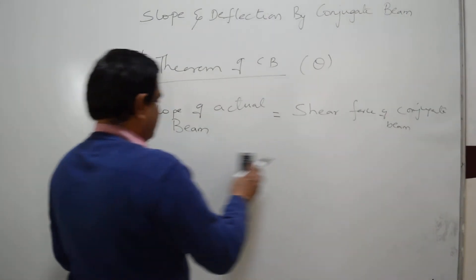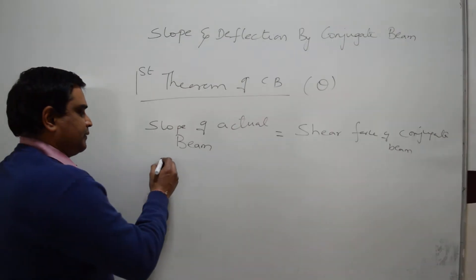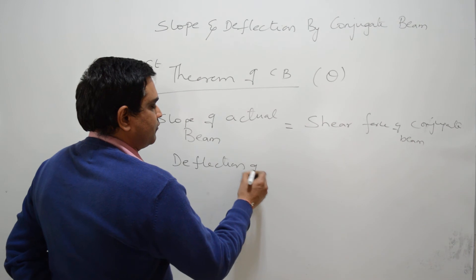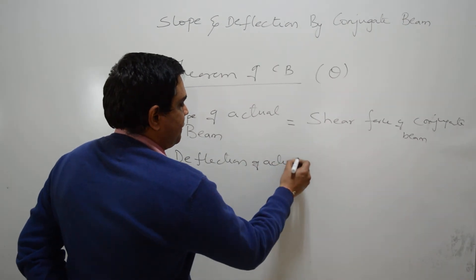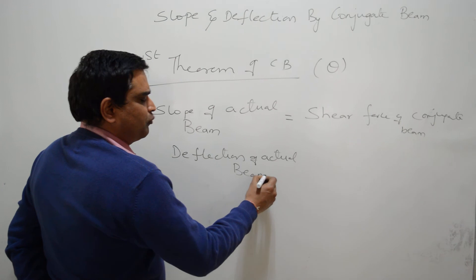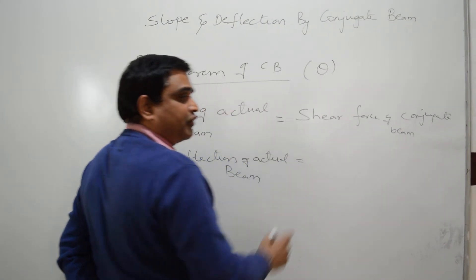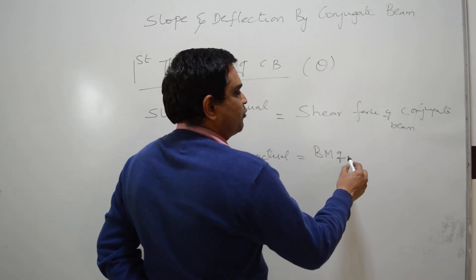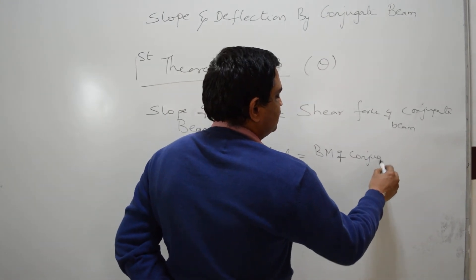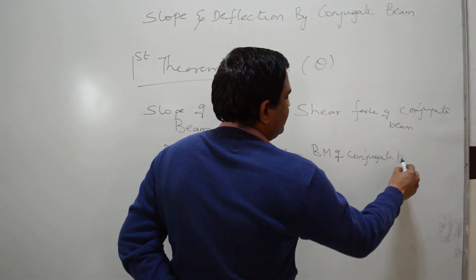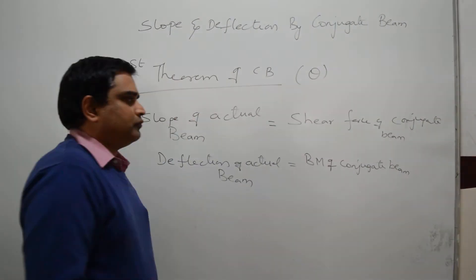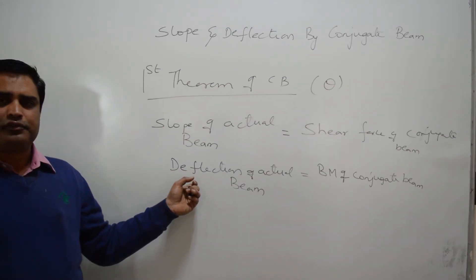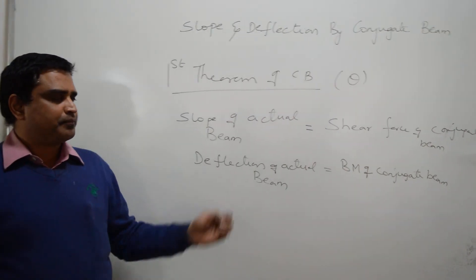The second theorem of the conjugate beam gives the value of deflection. The deflection of the actual beam is equal to the bending moment of the conjugate beam. So, the first theorem gives the value of slope of the actual beam, and the second theorem gives the value of deflection of the actual beam. Thank you.